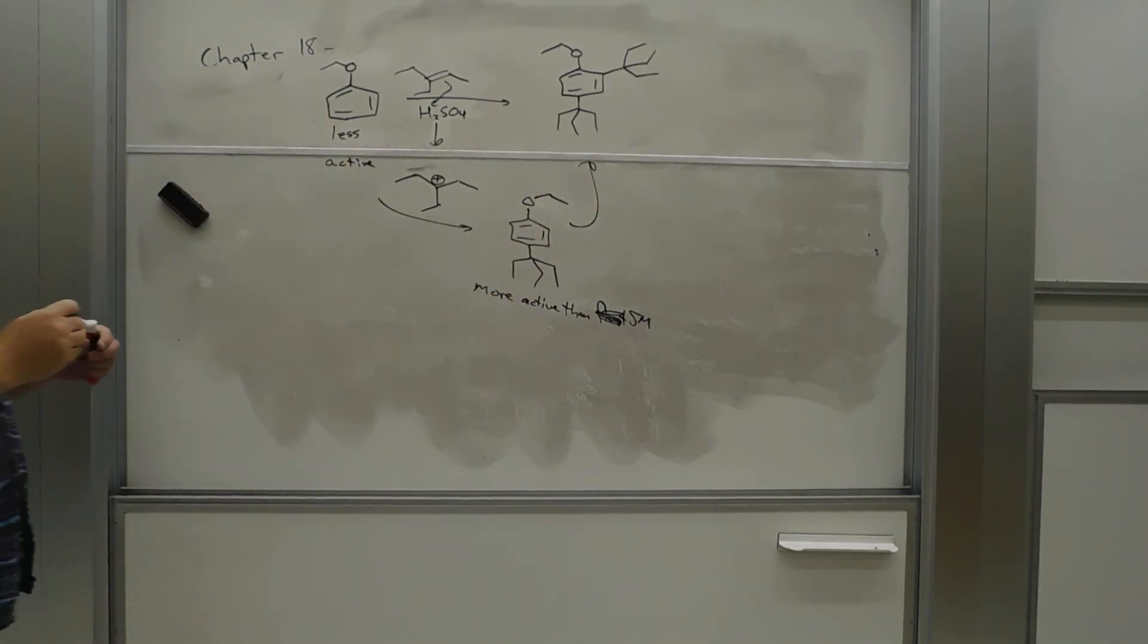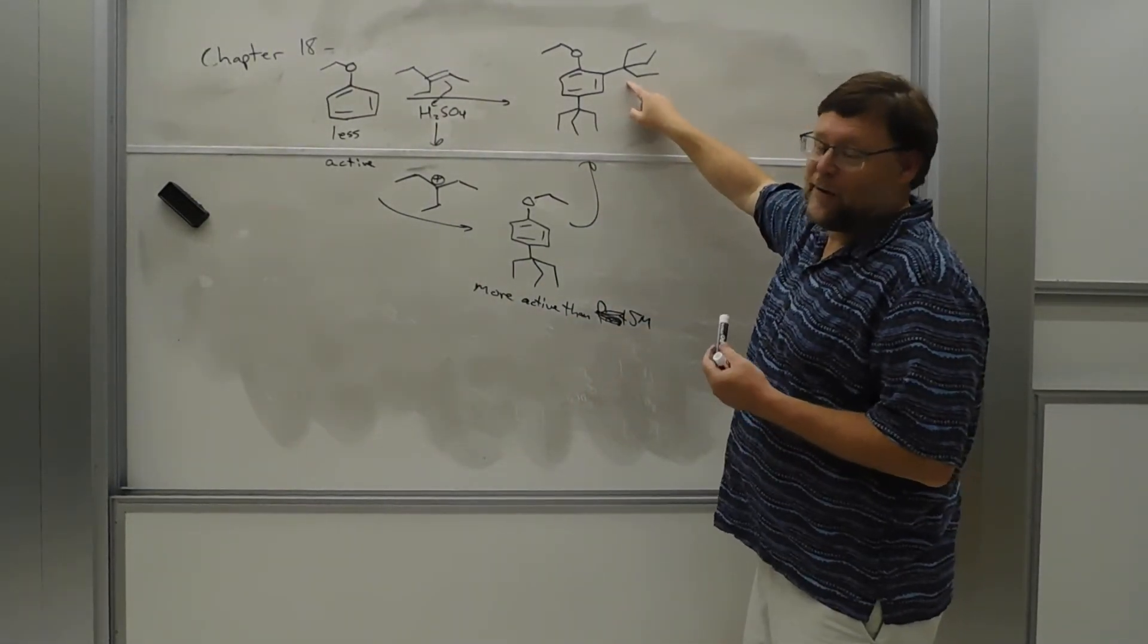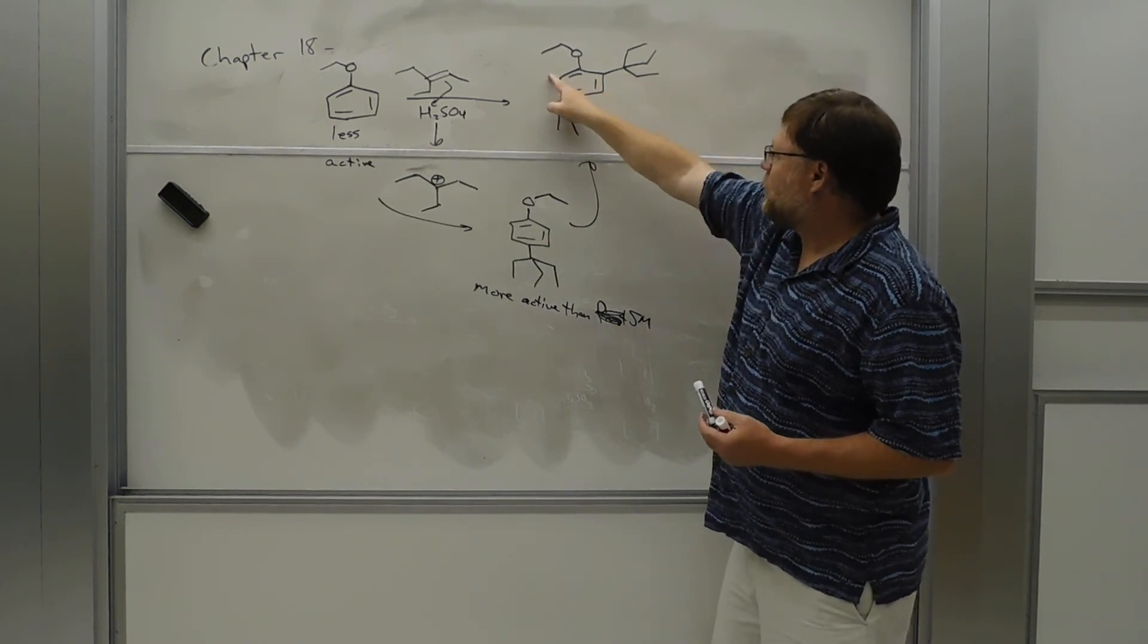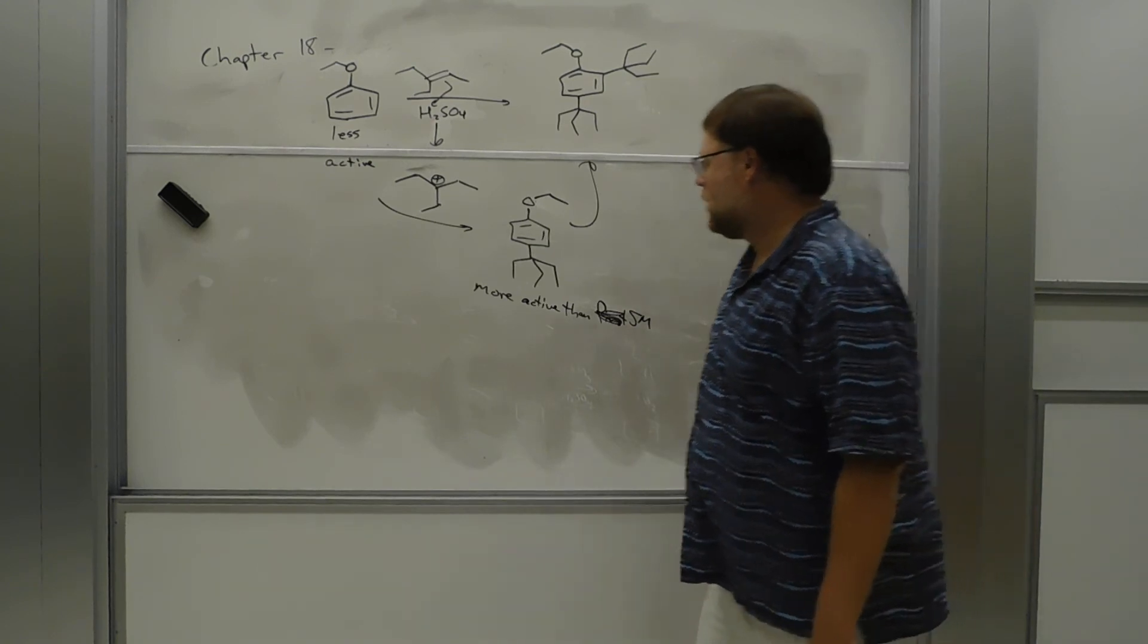And at that point, it probably does stop based on sterics. You've still added, you know, now you have three activating groups on the ring. But now, if you put another group there, this ethoxy group gets squeezed pretty hard. And so it probably won't go on twice.